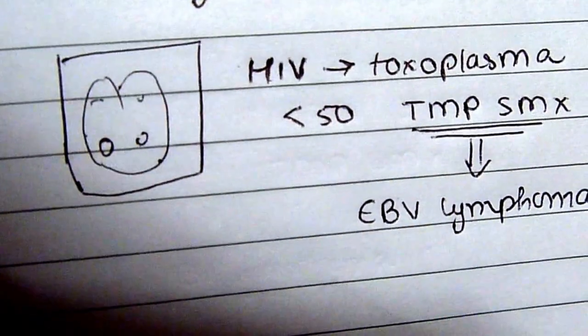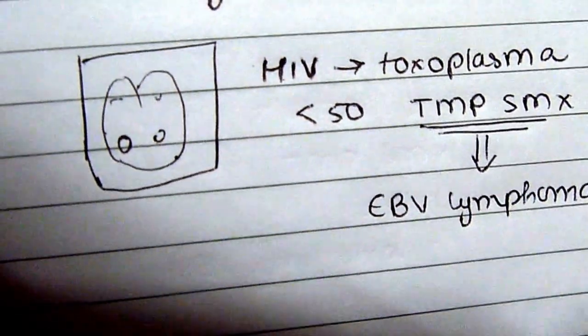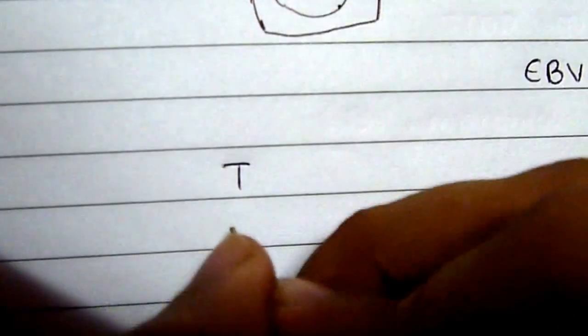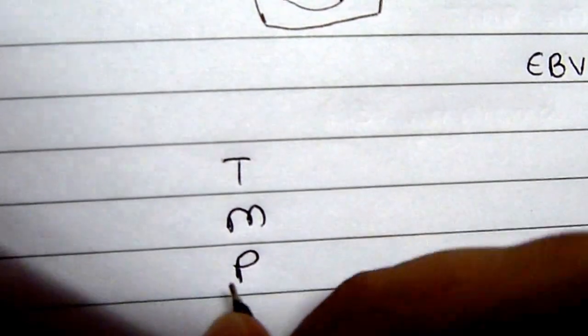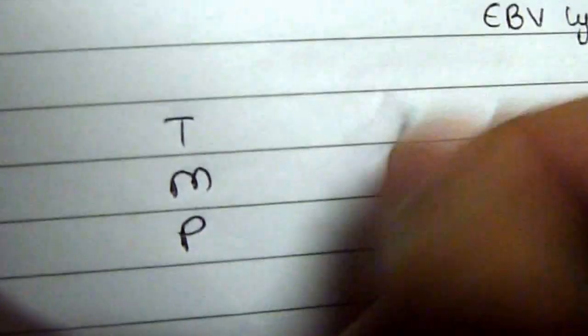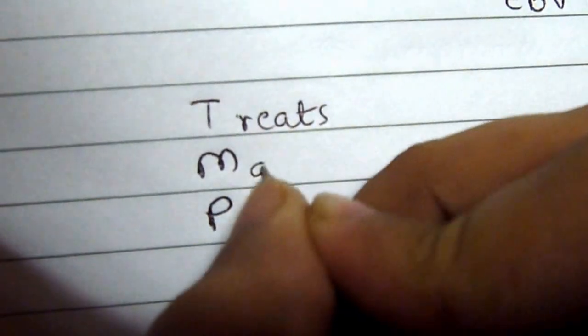an Epstein-Barr lymphoma if the patient does not get better on TMP-SMX. I thought of adding a mnemonic on TMP-SMX since we are talking about it. People say this mnemonic—I got it online—and it treats marrow poorly.